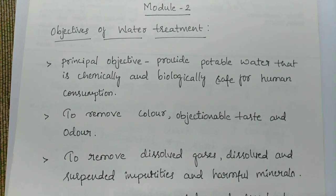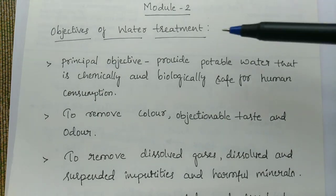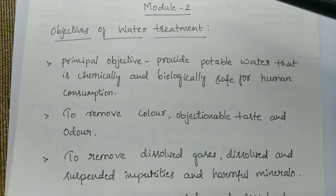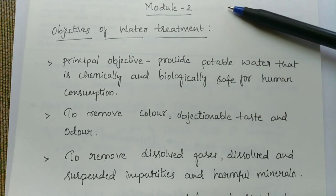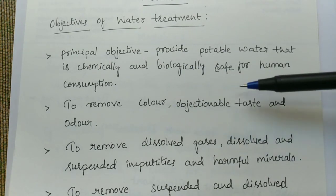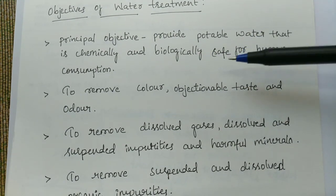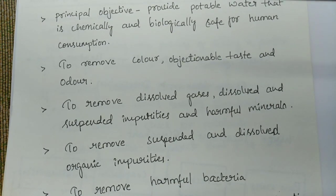In this video we will be discussing two major topics from Module 2: the objectives of water treatment, and the operation and flowchart of the water treatment plant. The principal objective of water treatment is to provide potable water that is chemically and biologically safe for human consumption. We invest a lot of money and time in order to make the water safe for drinking and all other purposes.